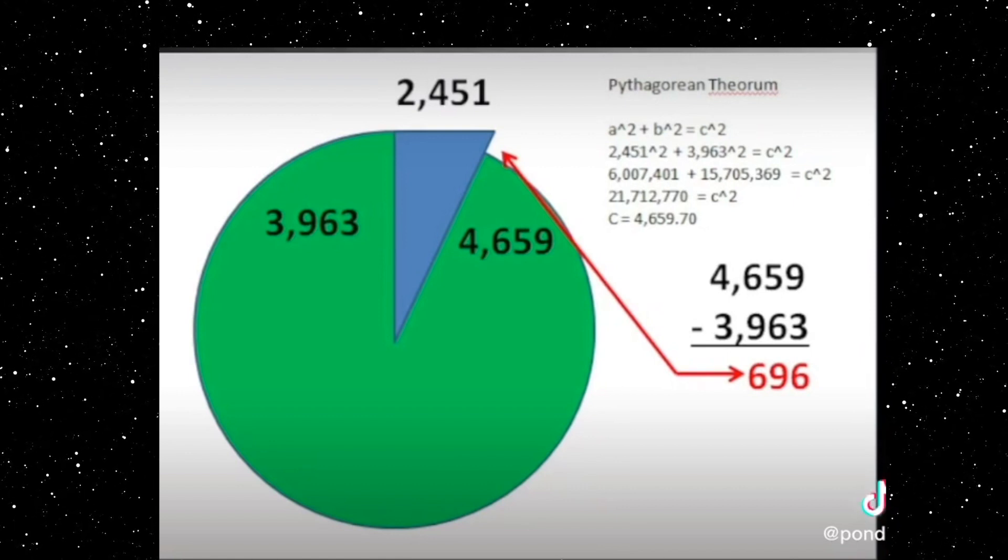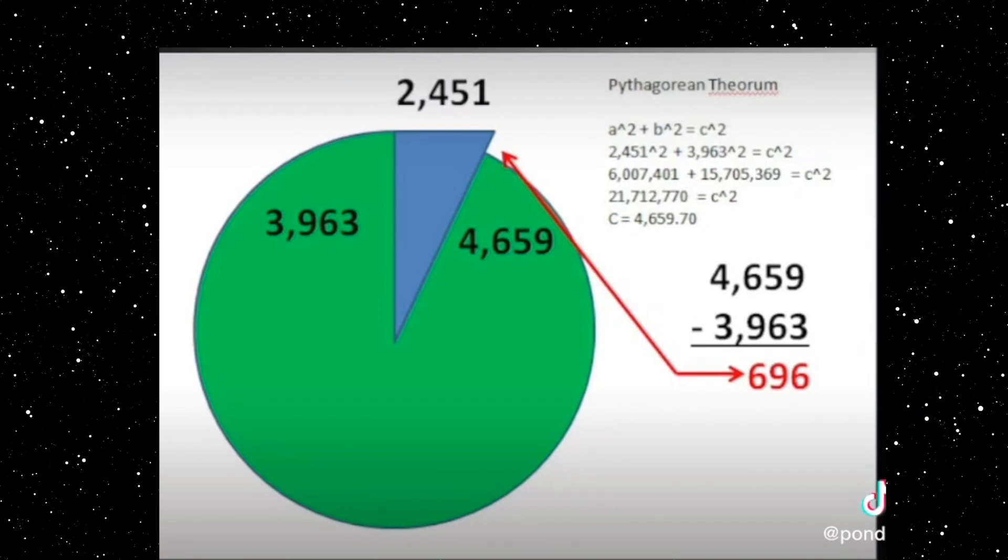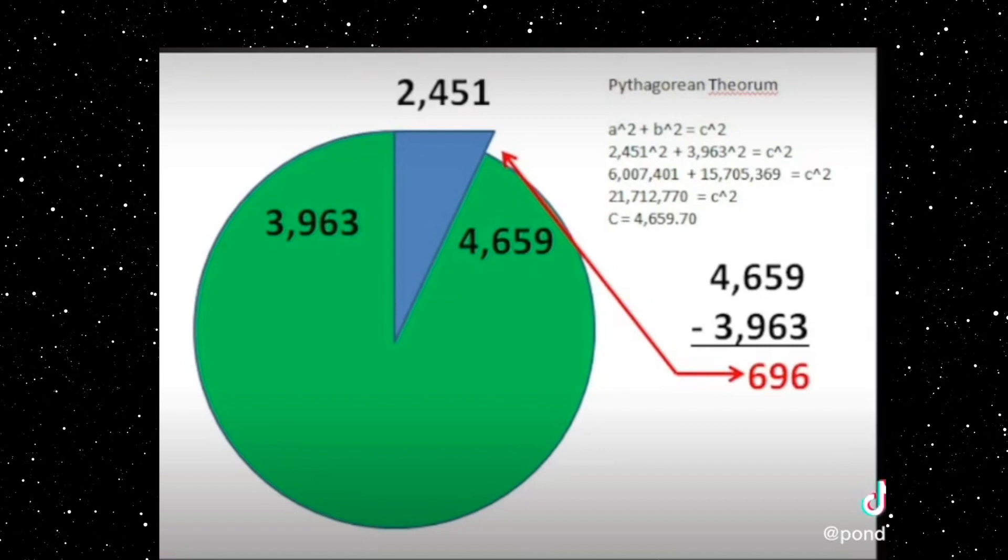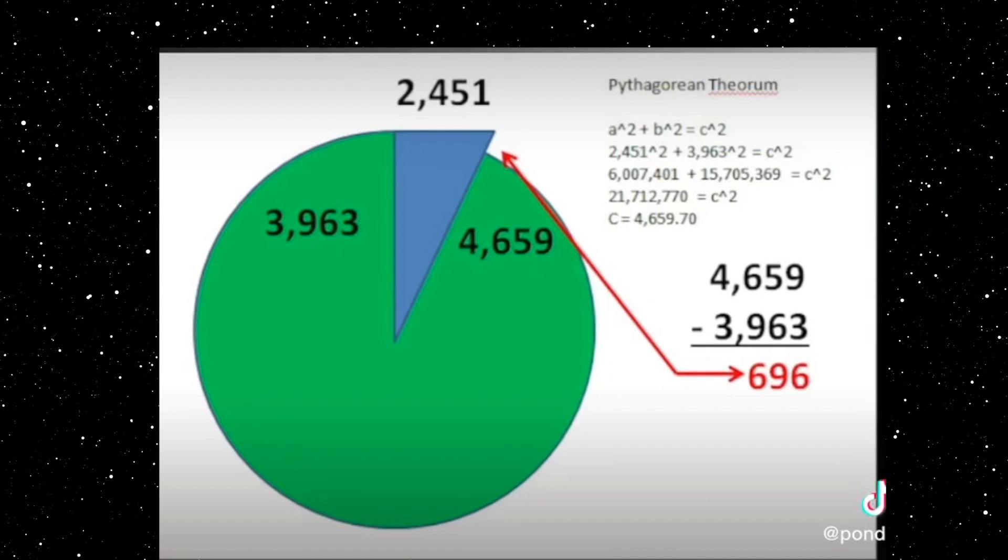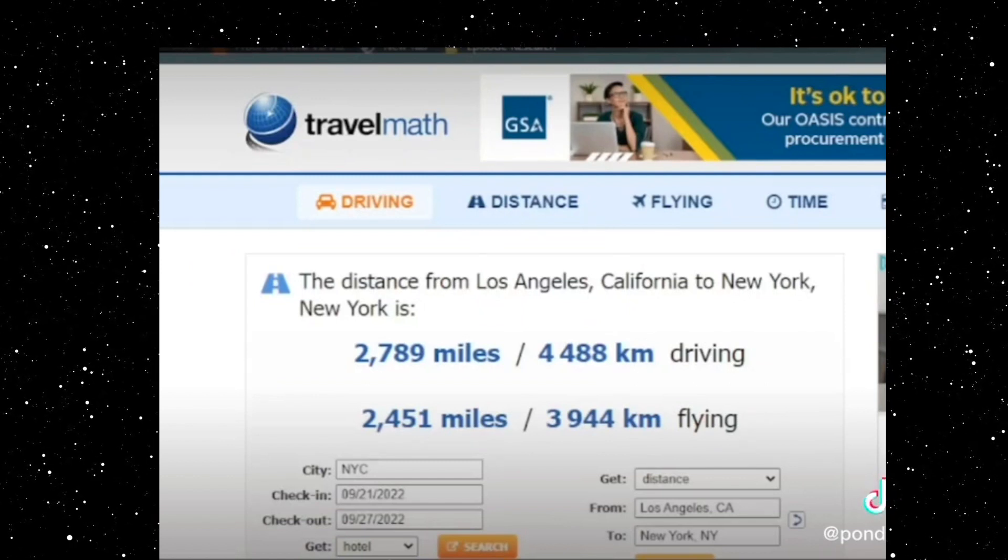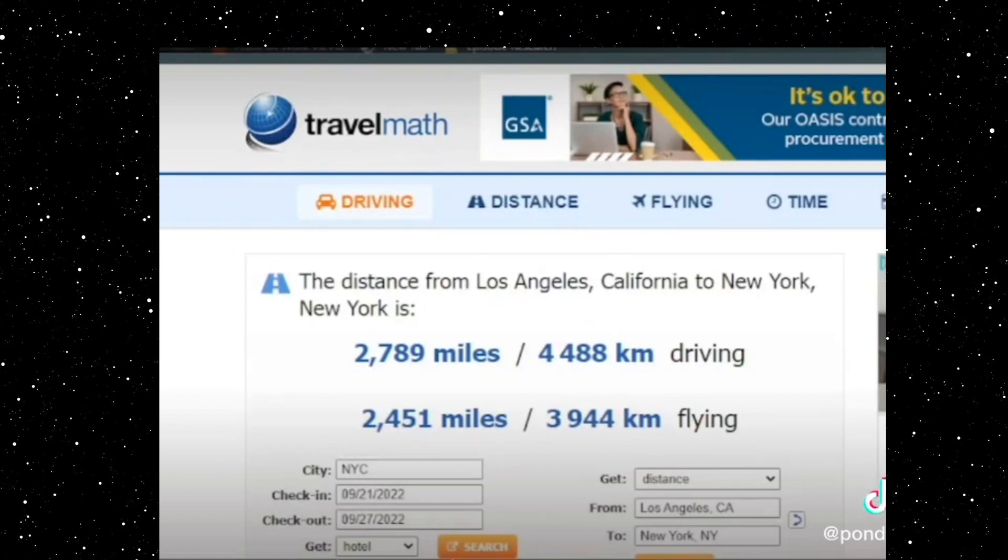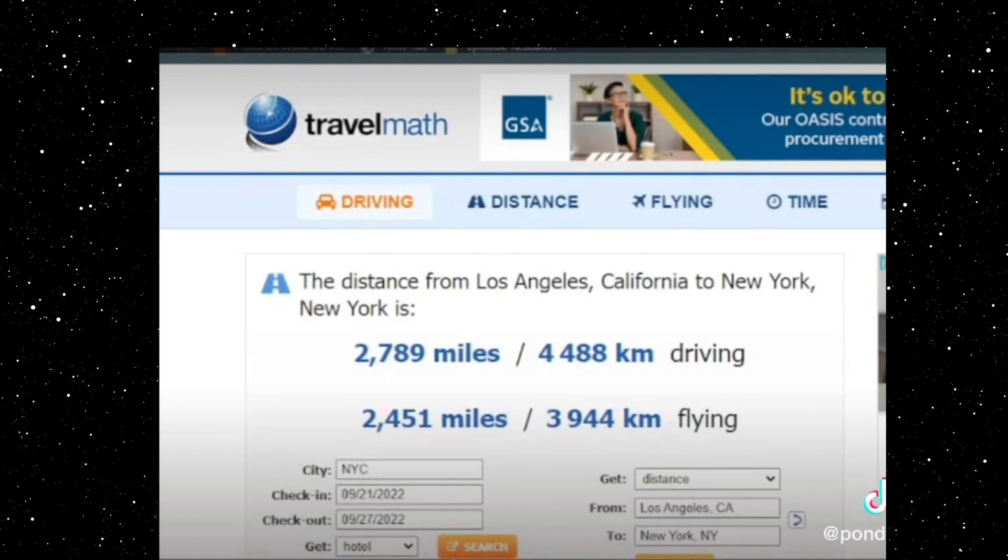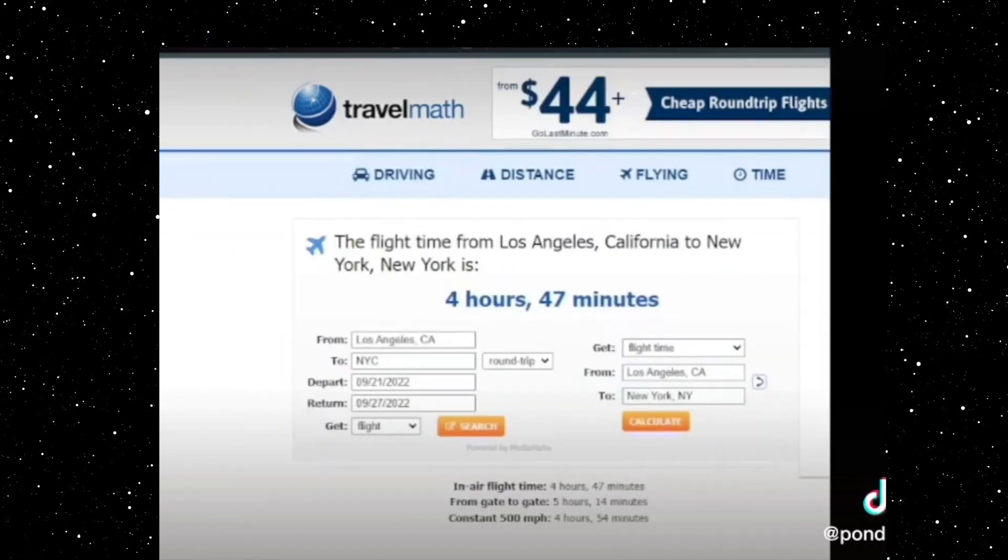So six hundred ninety-six miles is the drop from flat earth to curved earth. The interesting thing is this twenty-four hundred fifty-one is the distance in miles from Los Angeles to New York.